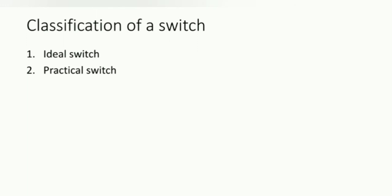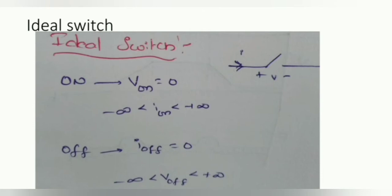We will now see the characteristics of ideal and practical switches. For an ideal switch, when it is ON, there is a finite amount of current, but the voltage drop during the ON state is zero. During the OFF state, the current is zero and the voltage is at its maximum value.